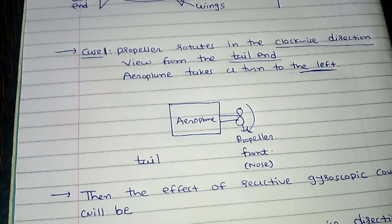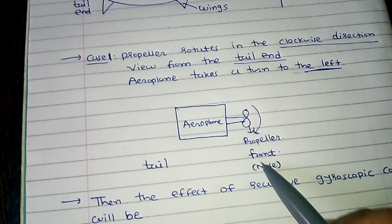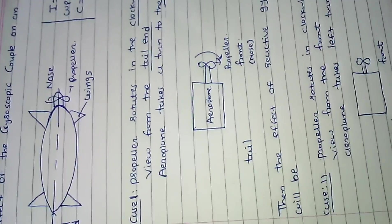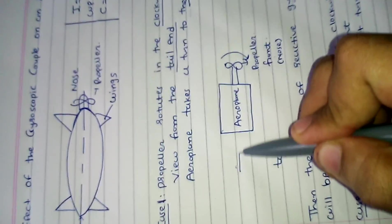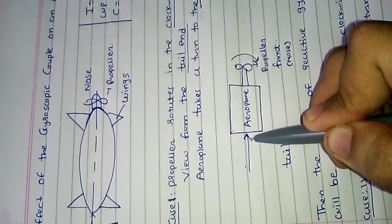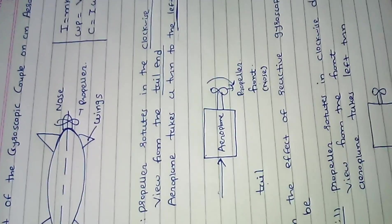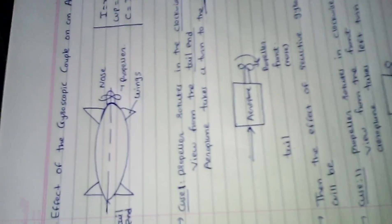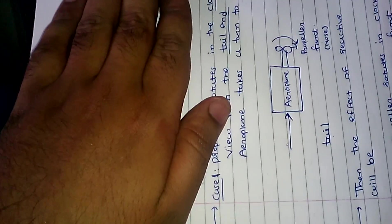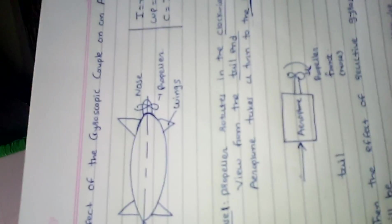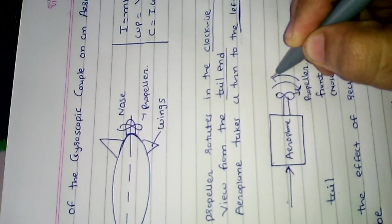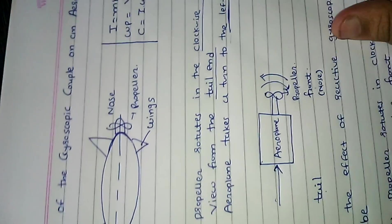Second condition is viewing from the tail end. So this is your front end and this is your tail end. Move the notebook from the tail end — this is the direction of viewing from the tail end. Then, aeroplane takes a turn to the left. This is my right hand and this is my left hand, so make one arrow to the left hand because the aeroplane takes a turn to the left.